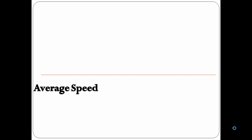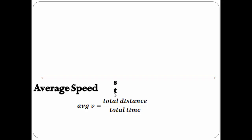The third one: average speed. For any object moving with variable speed, let us say it has covered a distance S in time interval T. So, average speed by definition will be calculated as total distance upon total time, that is S upon T.